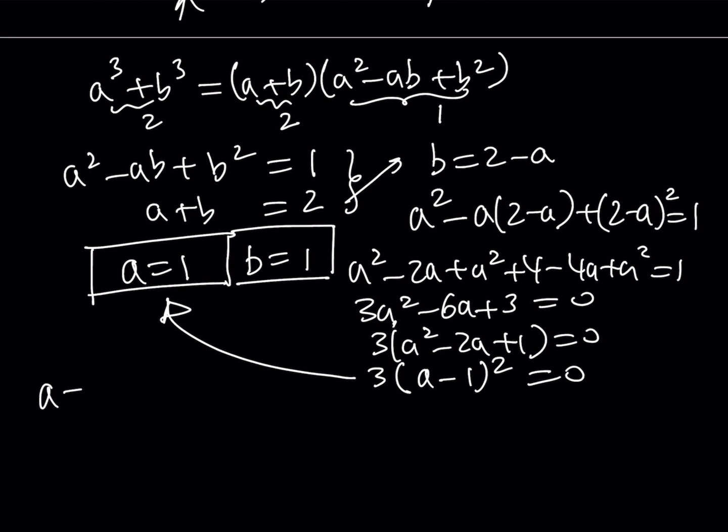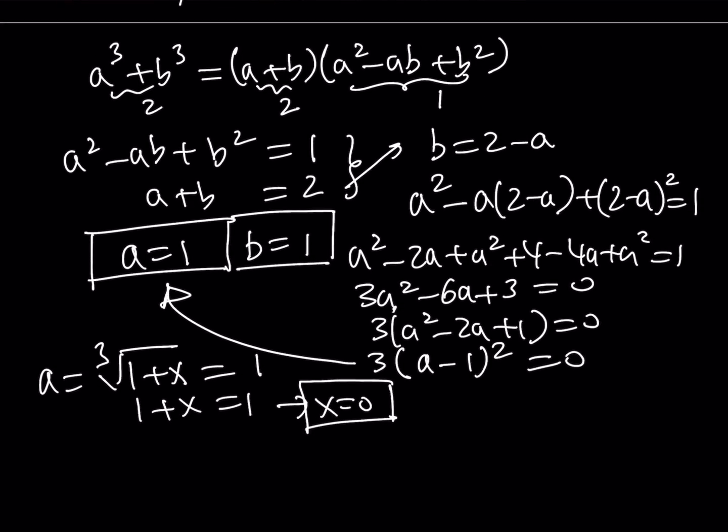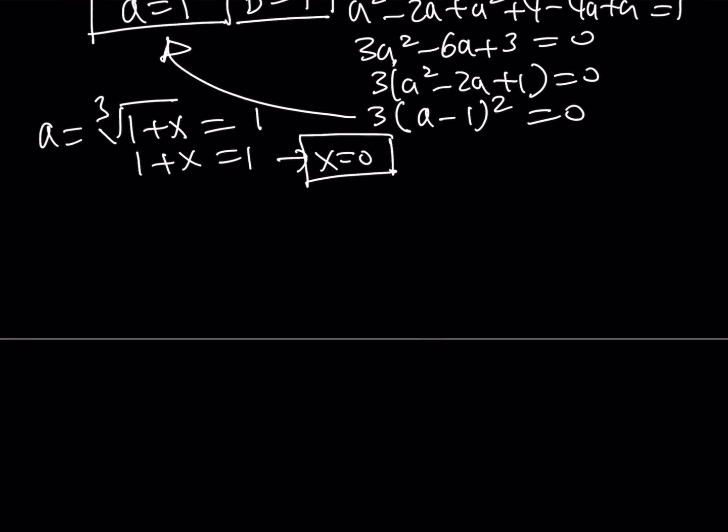A is equal to cube root of 1 plus X, and that is equal to 1. From here, if you cube both sides, you get 1 plus X equals 1. And X equals 0 as before. Obviously, we should be getting the same answer. Even though we use different methods, we should always arrive at the same answer.